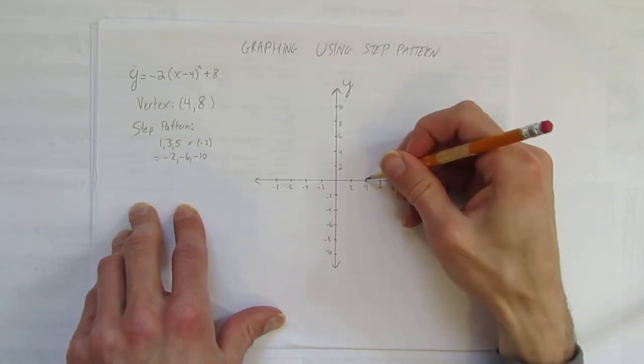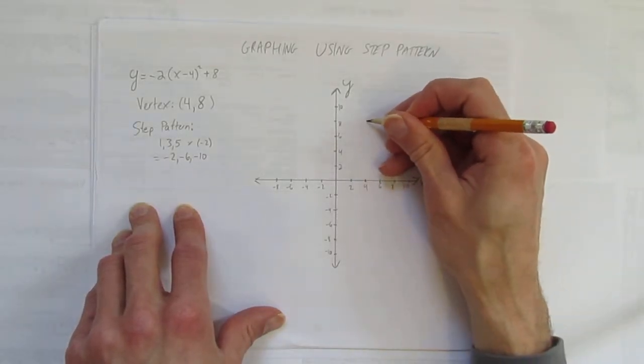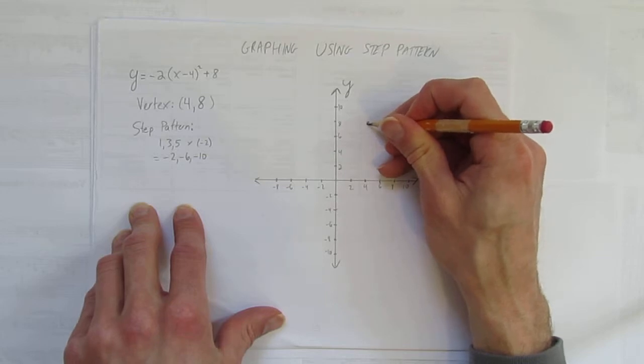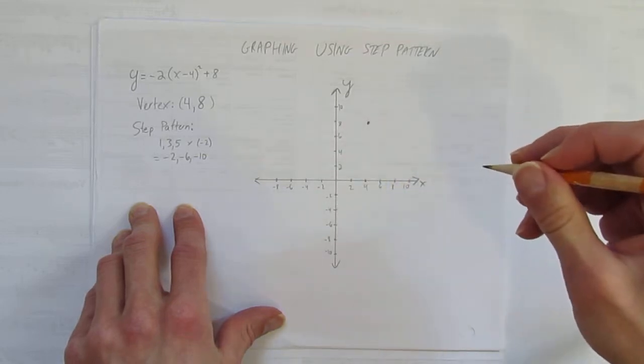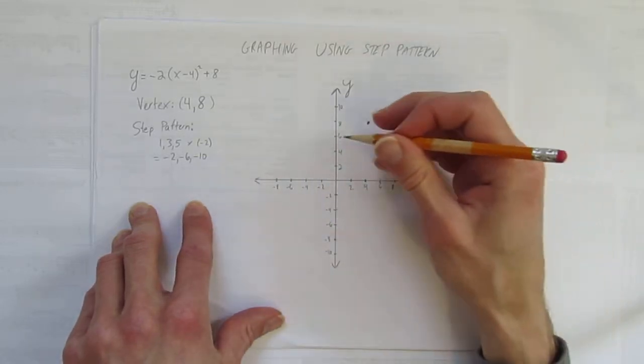Start by putting the vertex. The vertex is up at 4 comma 8. So we'll put a dot there. And now we count the step pattern. Here's how it works.